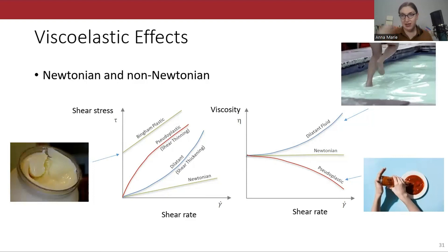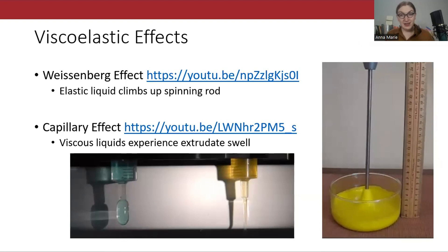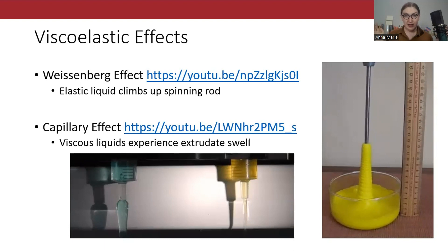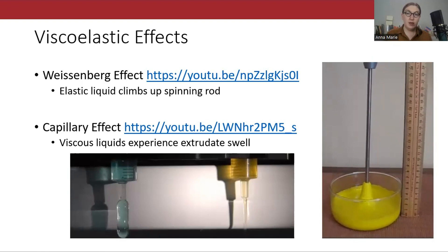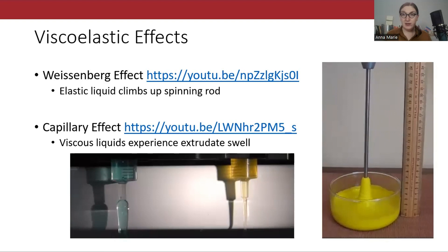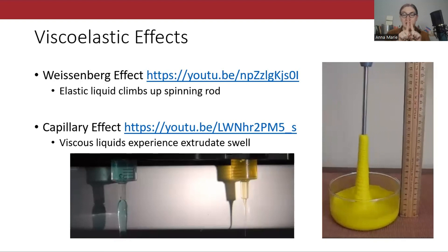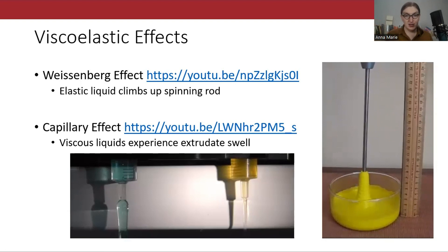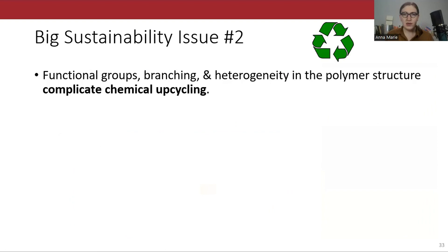Polymer processing is an interesting challenge because polymers exhibit phenomena like the Weissenberg effect, where molten polymer can climb up a spinning rod just because the chains are becoming entangled — like spaghetti on a fork — or extrudate swell, which is where a fluid expands outward as it's pushed through a tube. Viscoelastic polymers sort of expand, unlike water coming out of a tap which kind of shrinks. We'll talk more about this next week when we discuss extrusion, one of the most common ways to make plastic.